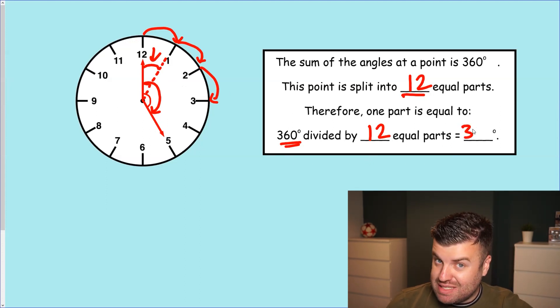And we can use our times table knowledge here to know that 36 divided by 12 is 3. So if it's 360, it's going to be 10 times bigger, which is 30. So we know now, because we've calculated it, we've not guessed, we've calculated that each jump here is 30 degrees.